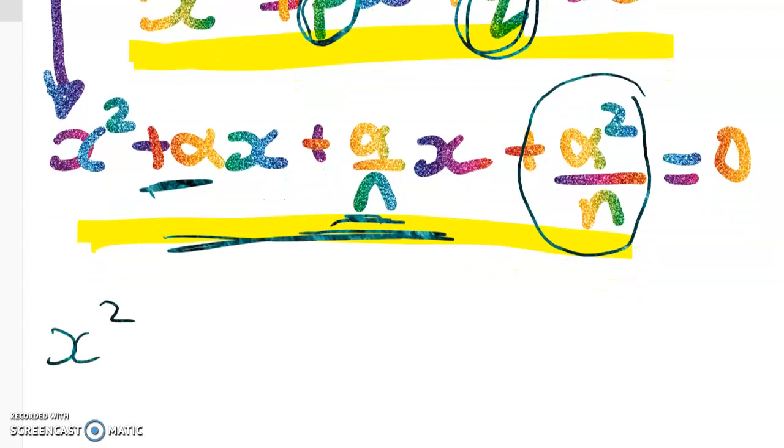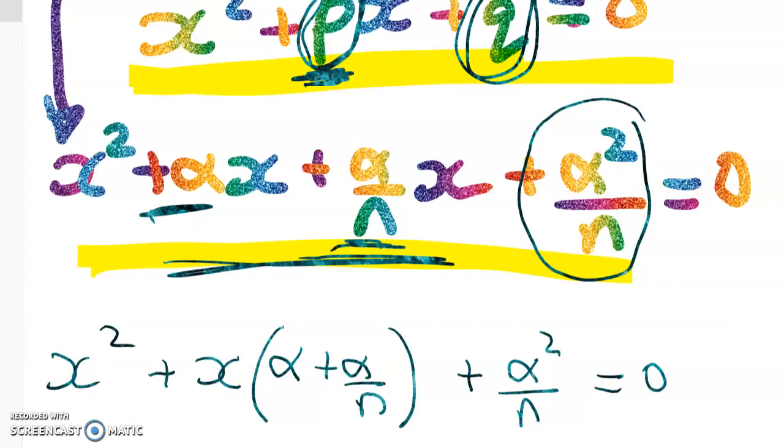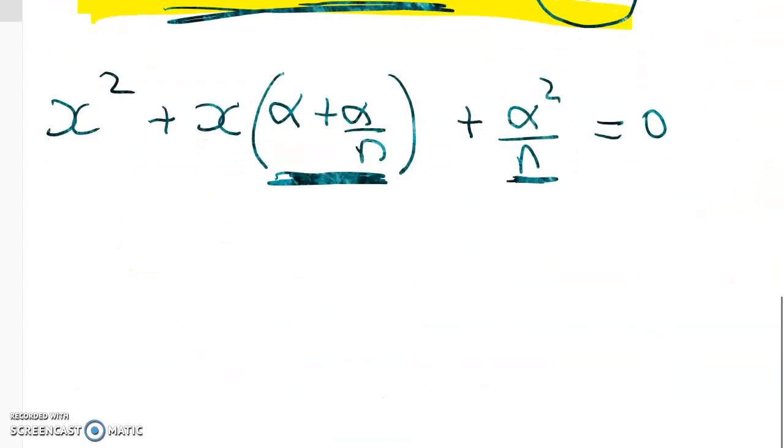So I get x squared plus x times alpha plus alpha over n plus alpha squared over n is equal to zero. So now we're matching up our coefficients. So this p here is equal to this thing here, and q is equal to this. So p is equal to alpha plus alpha over n, and q is equal to alpha squared over n.